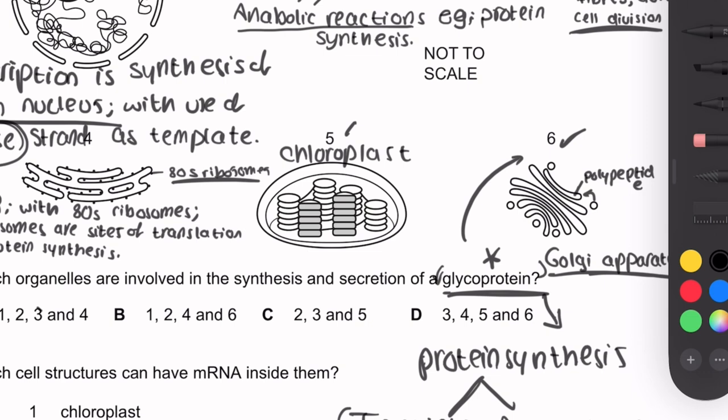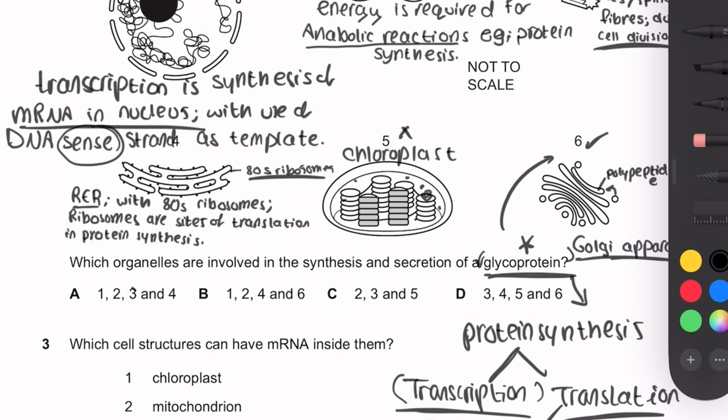Number 5, the chloroplast, is not involved — it has a role in photosynthesis. Although it does have 70S ribosomes and DNA, it is not part of the cell's main glycoprotein synthesis pathway. So the answer is organelles 1, 2, 4, and 6 — letter B.